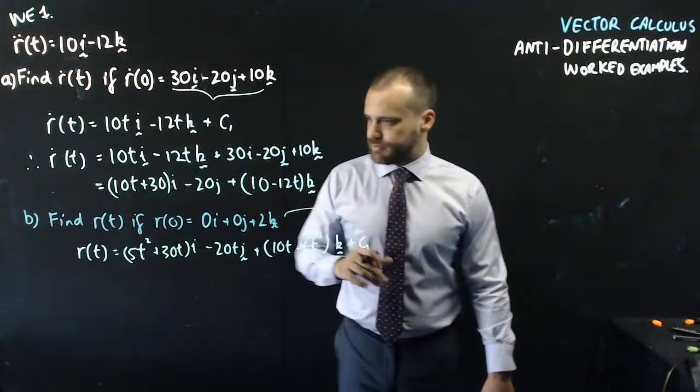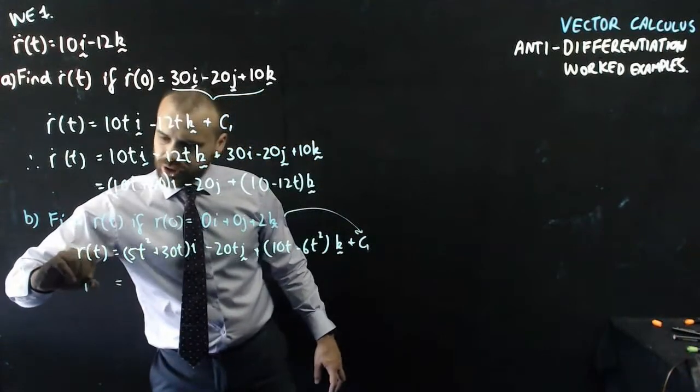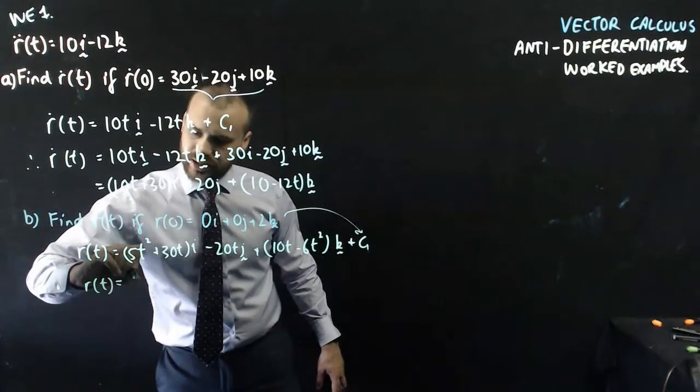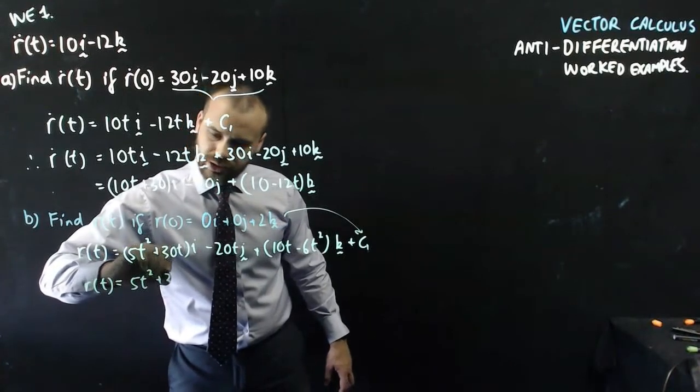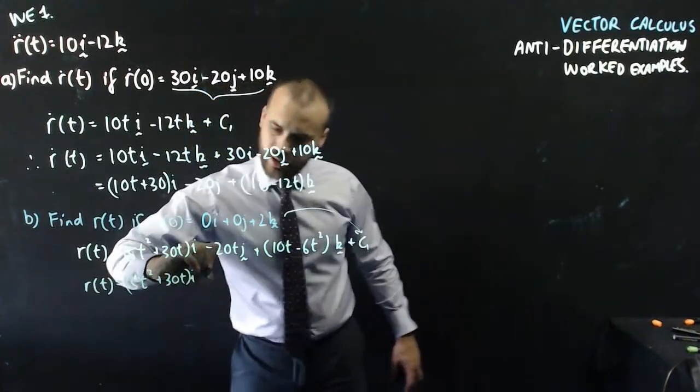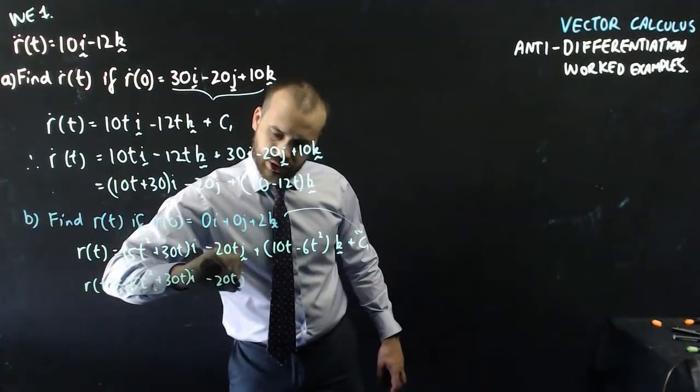No i's, no j's. So, I can now finish this off and say that it's r with respect to t equals 5t squared plus 30t, i. Negative 20t, j.